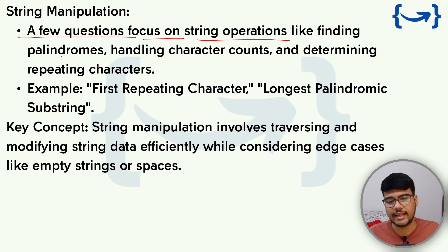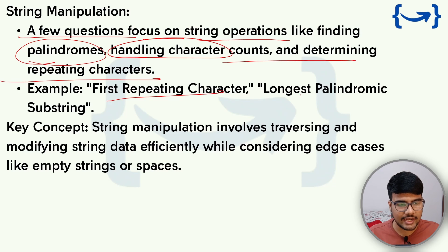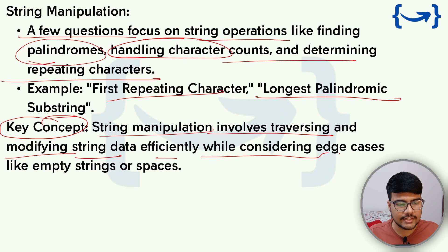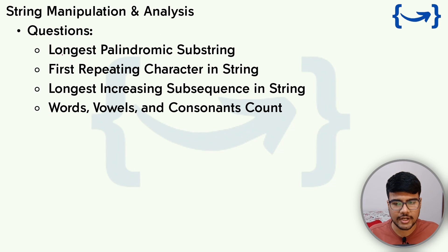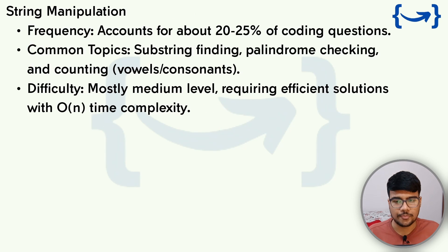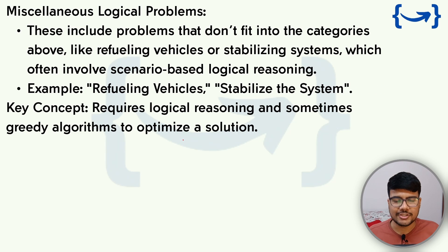For string manipulation, a few questions focus on operations like finding palindromes, handling characters, and determining repeating characters — both in previous years and currently. Topics include: first repeating character, longest palindromic substring, longest increasing subsequence in a string, and counting words, vowels, and consonants. String sorting by ASCII values also plays an important role. Frequency: 20 to 25 percent. Difficulty: mostly medium level, requiring efficient O(n) solutions.